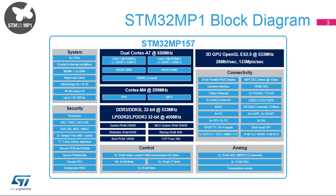In addition to this powerful application core, it also embeds a Cortex-M4 32-bit RISC core with single-precision floating-point unit running at up to 209 MHz. Finally, a powerful 3D GPU is available supporting OpenGL ES 2.0 and running at up to 533 MHz.